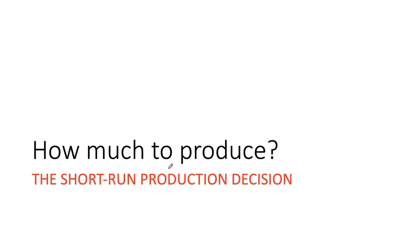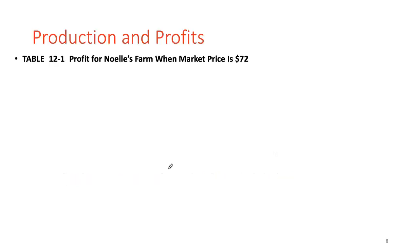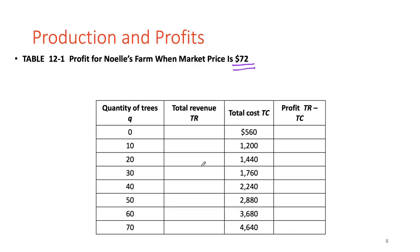How much should a firm produce? Let's look at an example for Noelle's firm, which produces trees, with a market price of $72 per tree. We have output in the first column and total cost in the second. Revenue is simply price times quantity. The profit column is total revenue minus total cost. Note that when Noelle produces zero trees, her total cost is still $560 — that's her fixed cost in the short run.